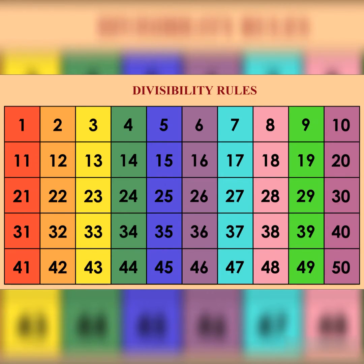Divisibility by 10 – a number is divisible by 10 if it has 0 in its units place.